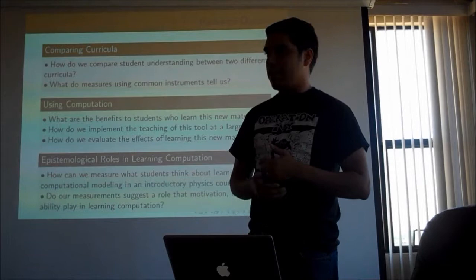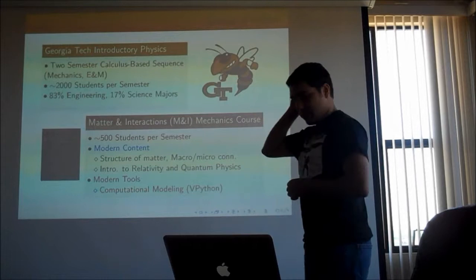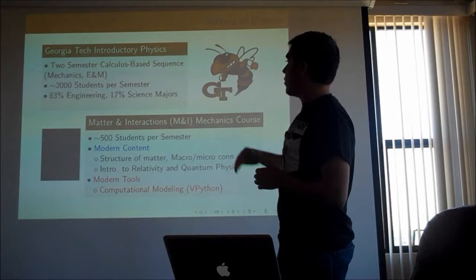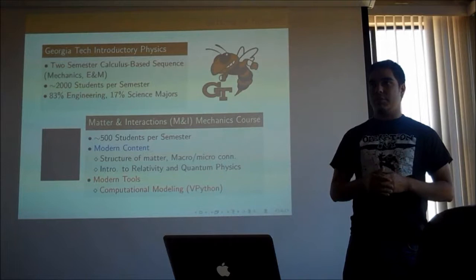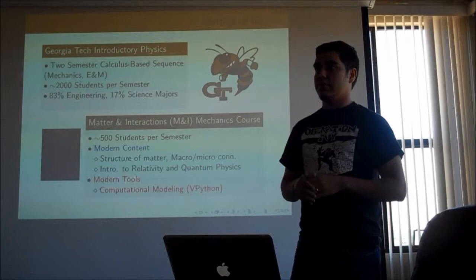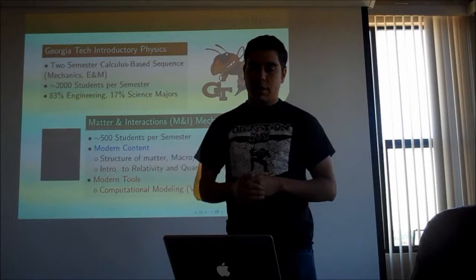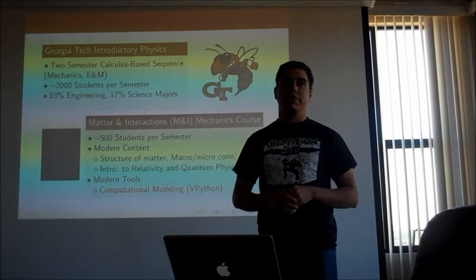To give you a sense of how we did things in Georgia: we have a very large two-semester calculus-based sequence, 2,000 students. We have about 13,000 undergraduates at Georgia Tech, so 2,000 of them are taking physics every semester. Most of them are engineering majors — we're an engineering school. In the content reform section, the Matter and Interactions course, we teach about a quarter of them, so 500 students.